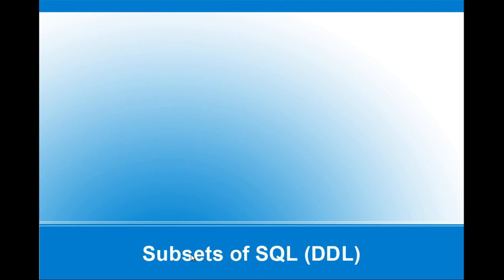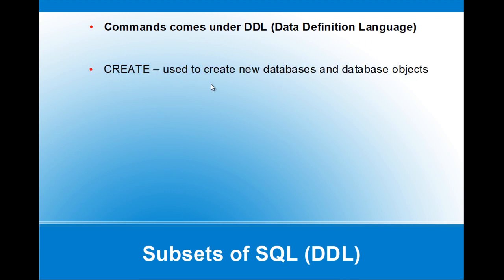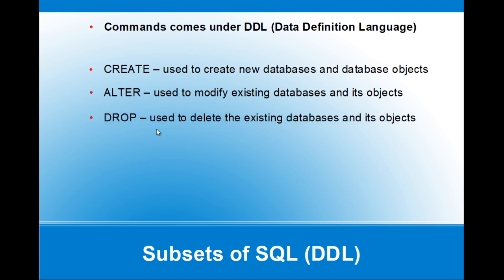DDL means Data Definition Language. The first command is CREATE, which is used to create any new database or database objects like tables, views, functions, stored procedures, indexes, etc. The next one is ALTER, used to modify the existing database or database objects — so CREATE defines the object and ALTER modifies the existing definition. The third one is DROP, which is used to delete an existing database or database objects, such as dropping a table or a view.